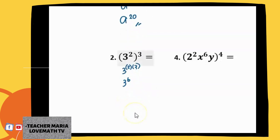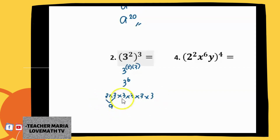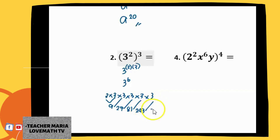The exponent tells you how many times you are going to multiply the base by itself. Since the exponent is 6, you multiply 3 by itself 6 times: 3×3×3×3×3×3. So, 3×3 is 9, times 3 is 27, times 3 is 81, times 3 is 243, times 3 is 729. Your answer is 729.